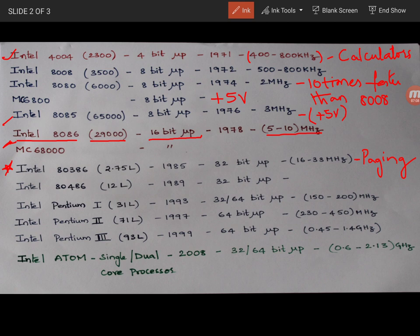So Pentium 1, Pentium 2, Pentium 3 series. So the number of transistors were Pentium 1 31 lakhs, Pentium 2 71 lakhs and Pentium 3 93 lakhs. And they were introduced in the year 1993, 1997 and 1999.